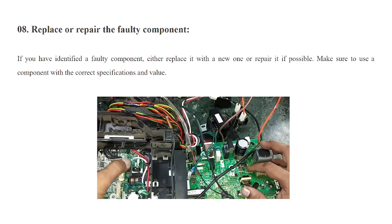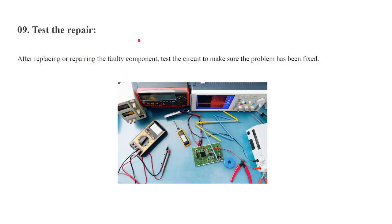The ninth step is to test the repair. Once you have repaired the circuit, it's time to test it again. You can test the circuit with different testing devices like a multimeter, oscilloscope, or any other devices. After replacing or repairing the faulty component, test the circuit to make sure the problem is fixed.